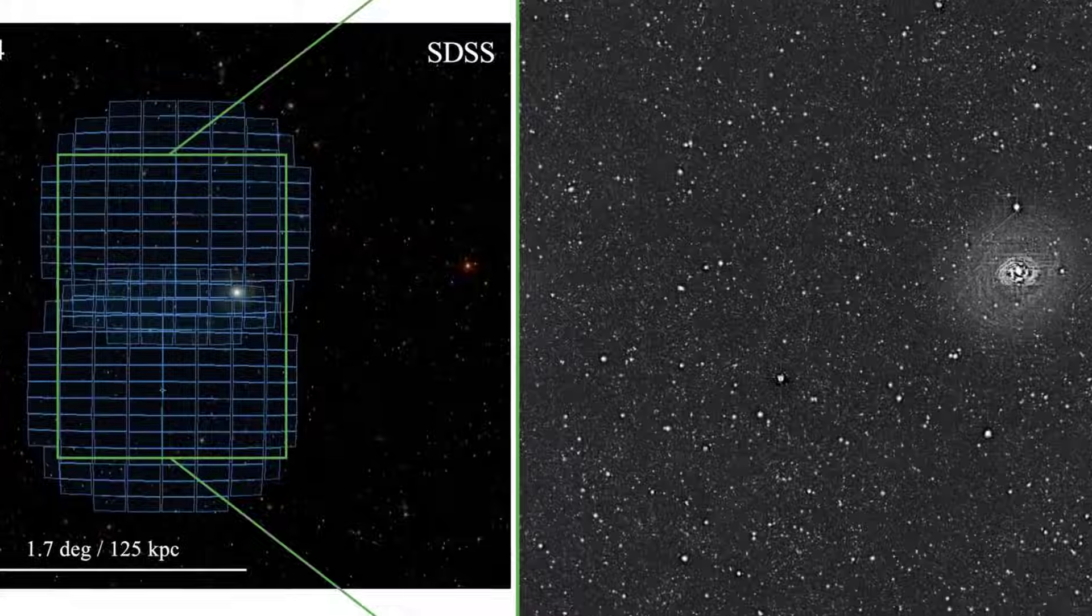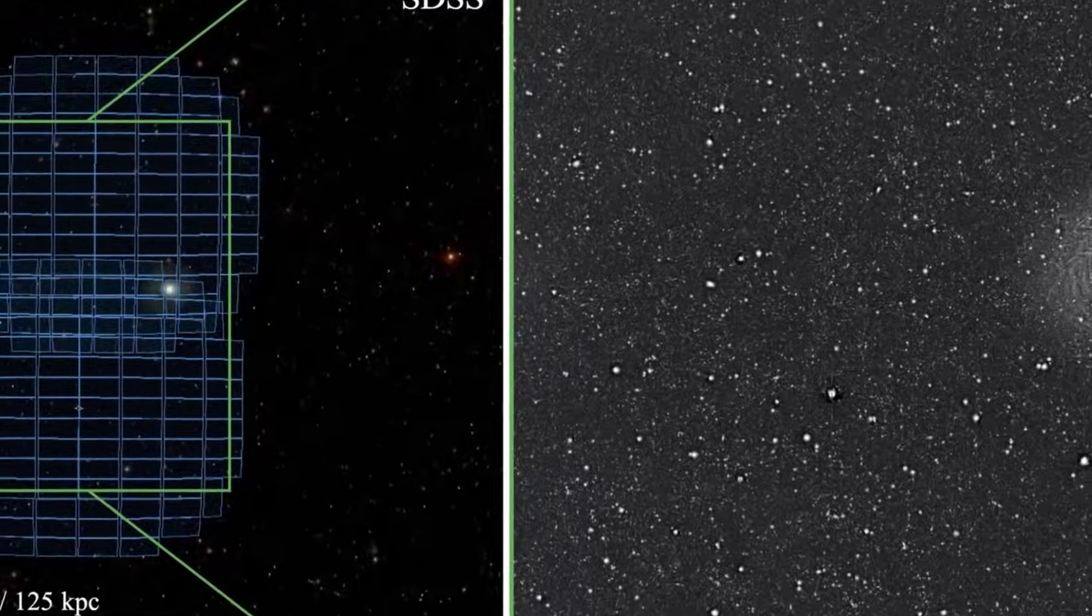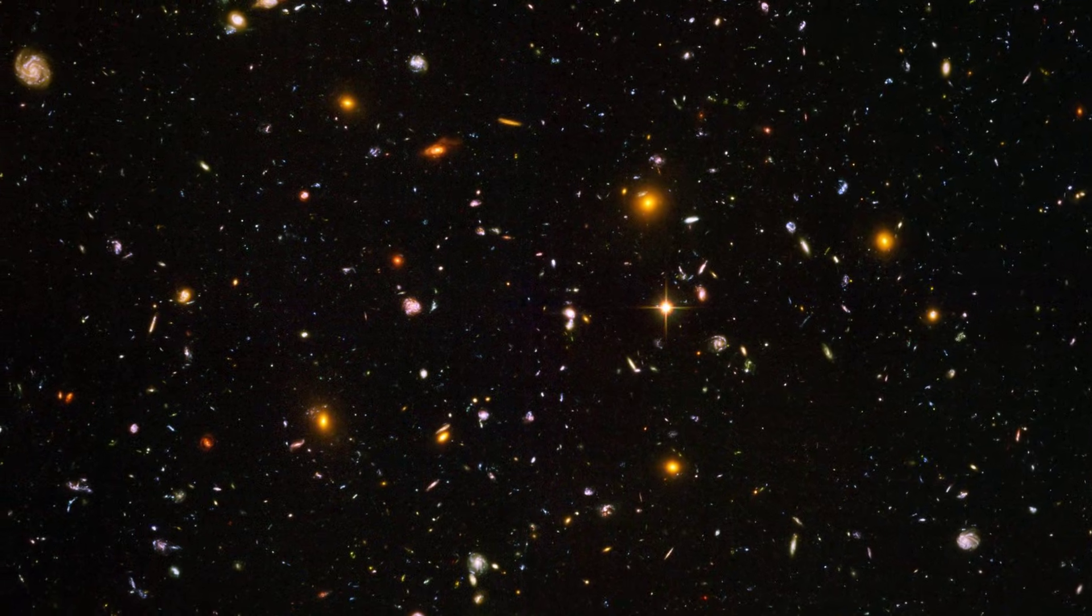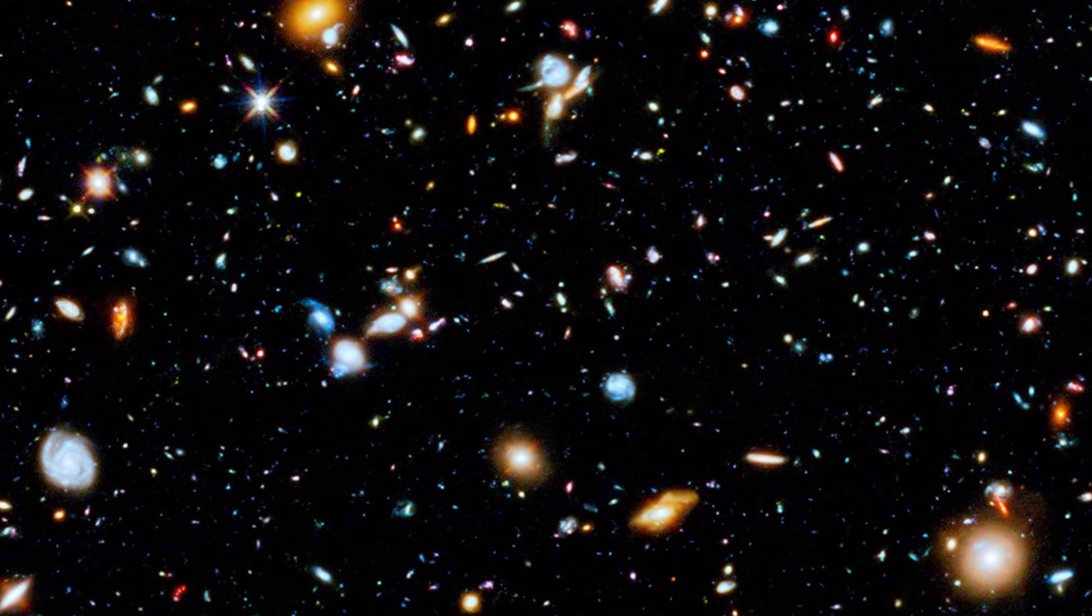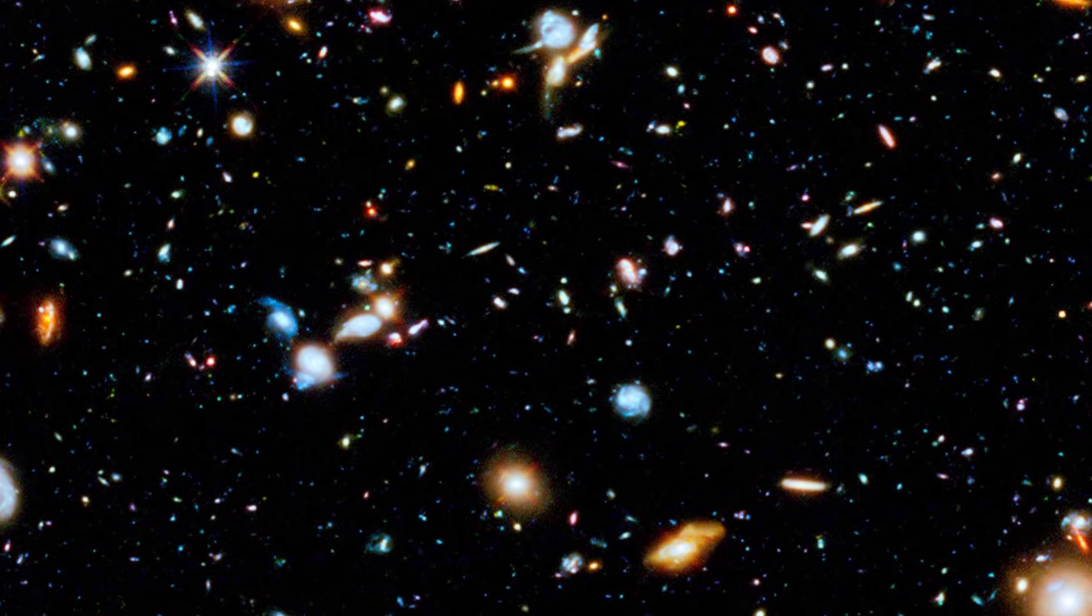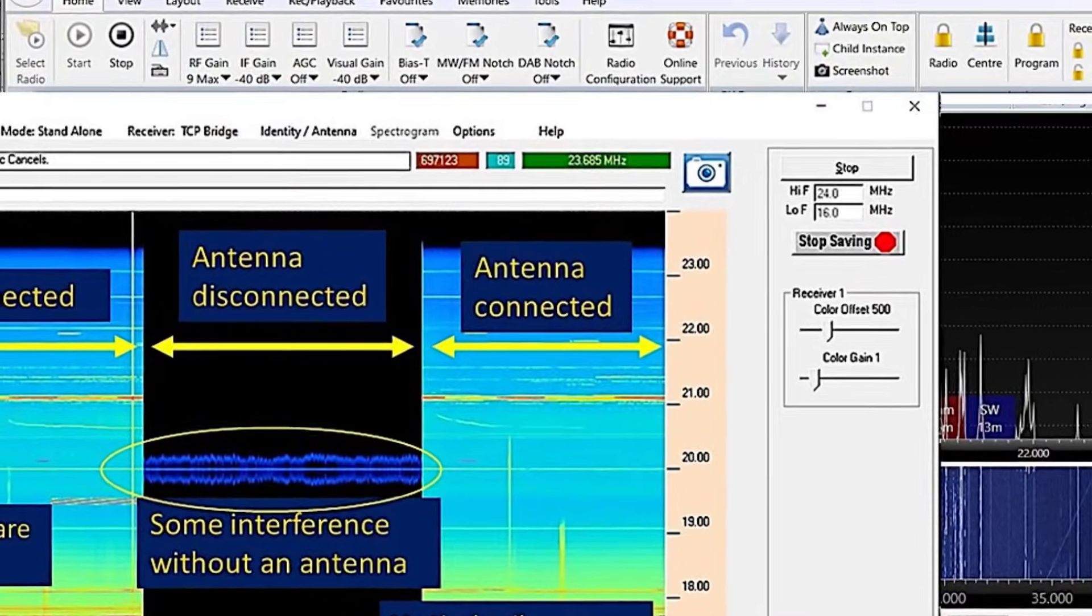When the reduction pipeline finished, the result was absolute. The field was blank. Not a single resolved star appeared at the position of the hydrogen cloud. Every point source inside the projected area matched the color and sharpness of background galaxies, not stars at 14 million light-years. The imaging analysts ran artificial star tests, injecting simulated dwarf galaxies at the same distance and verifying that anything brighter than a few thousand solar masses in stars would have been visible. The verdict stood: no stellar population, no diffuse glow, no hint of a hidden galaxy.